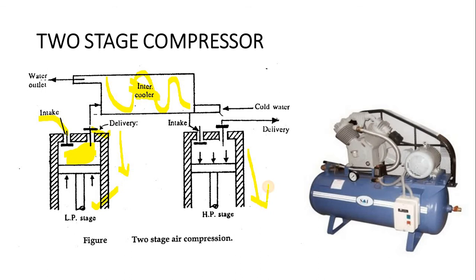The working of the high pressure stage is the same: when the crank rotates, the piston moves from TDC to BDC — the suction stroke — and when the piston reaches the bottom position, suction is completed. When the crank rotates again, the piston moves from BDC to TDC, the trapped air gets compressed as the piston exerts force on it, and high-pressure air — higher than the low pressure side — exits from the delivery stroke. Finally, this high-pressurized air enters the reservoir, from where it is used for high pressure applications.